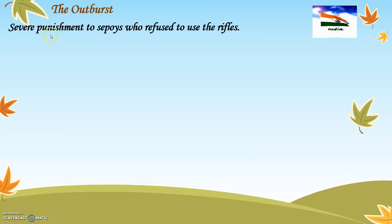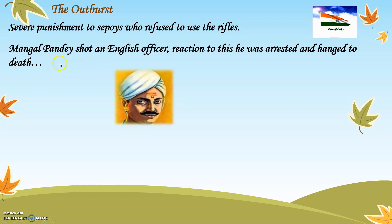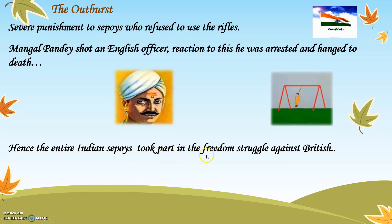The outburst: Severe punishments were given to sepoys who refused to use such rifles. There was a person called Mangal Pandey who supported such soldiers. He shot an English officer and because of that he was arrested and hanged to death. Because Mangal Pandey was killed by the Britishers, the entire Indian sepoys became even more angry and took part in the freedom struggle against the Britishers.